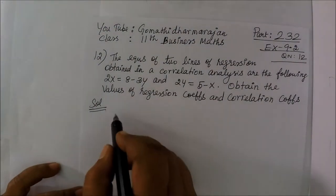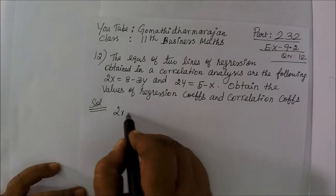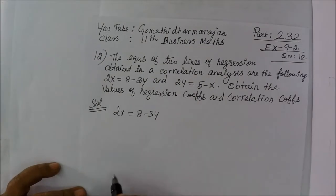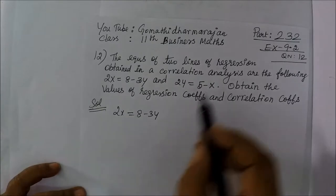Now we have two equations: 2x is equal to 8 minus 3y, then 2y is equal to 5 minus x.